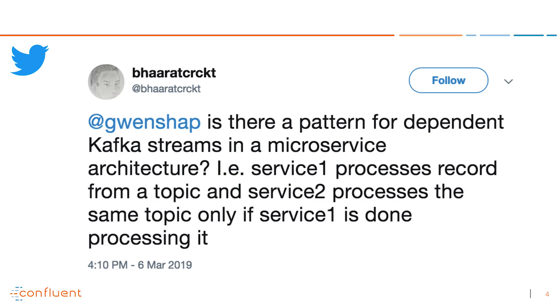And now a question from Twitter. Baharat Cricket, or something along those lines, sorry for mispronouncing your name, asked: is there a pattern for dependent Kafka streams in microservice architecture? He has service one processing a record from a topic, and then service two wants to process the same topic but only run after service one already processed it. The easy answer is basically have service one output a message to a different topic saying it's done processing, and then have service two read from that topic to process things that service one already handled.